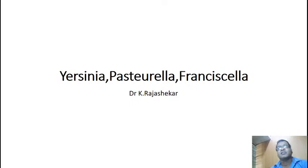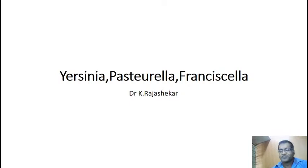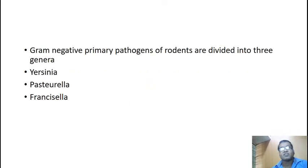Good afternoon students, today I am Dr. Vatshekar. Today we are going to discuss about genus Yersinia, genus Pasteurella and genus Francisella. Gram-negative primary pathogens of rodents are divided into three genera: Yersinia, Pasteurella and Francisella, and Yersinia is the most important one. Yersinia pestis causes plague.